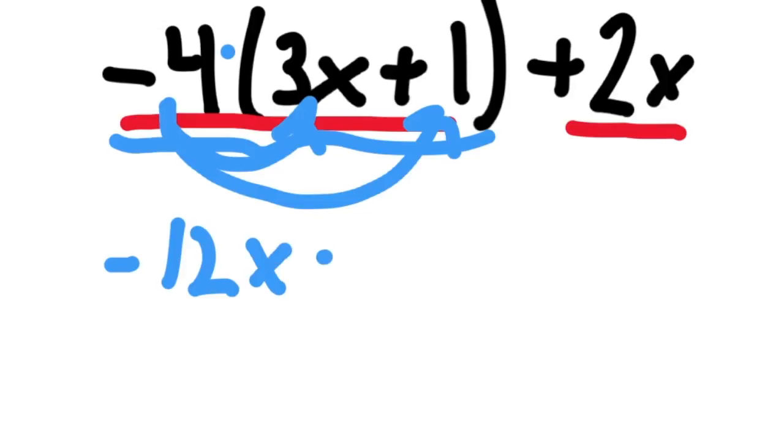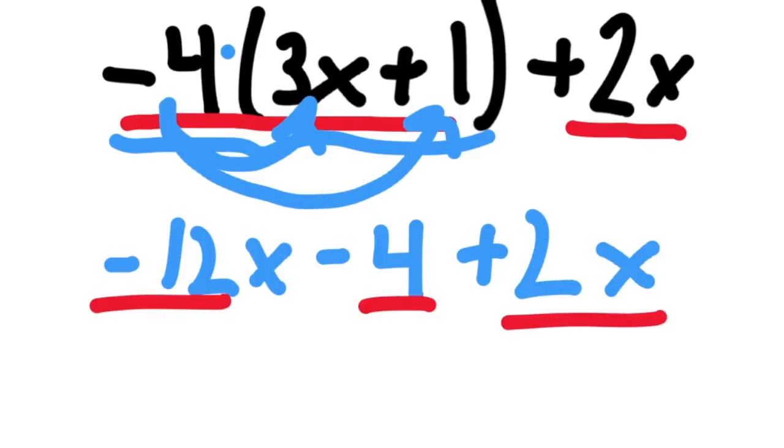-12x - 4 + the 2x from outside the parentheses. Now you can see that we have three terms. The only two like terms have the x variable, so -12x + 2x is -10x - 4, and that's simplified all the way.